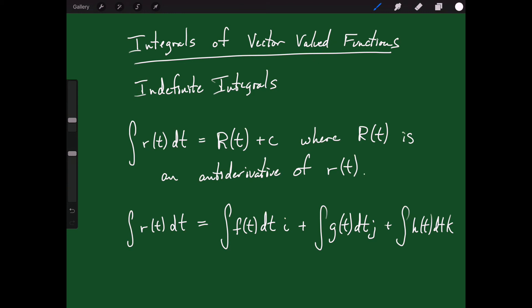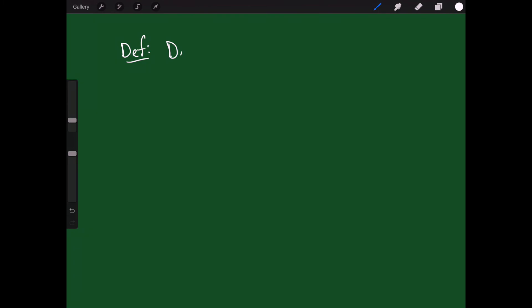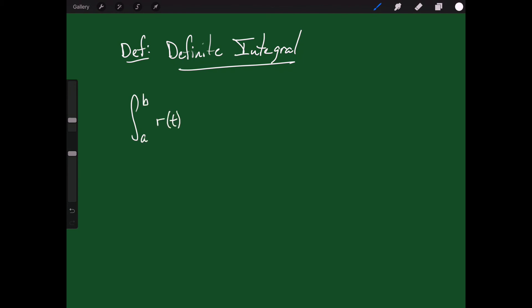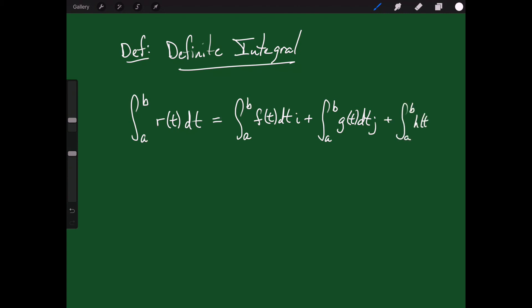So if you take each of those component integrals you get the indefinite integral of a vector-valued function. Just like taking the derivative, taking the antiderivative of a vector-valued function is not hard — you're basically just doing three integrals instead of one. Very similar for definite integrals: the integral from a to b of r of t dt equals the integral from a to b of f of t dt times i, plus the integral from a to b of g of t dt times j, plus the integral from a to b of h of t dt times k.